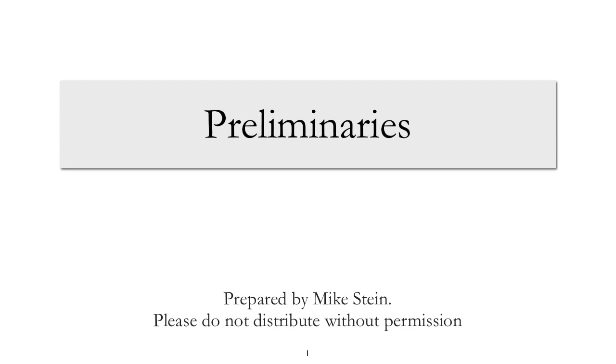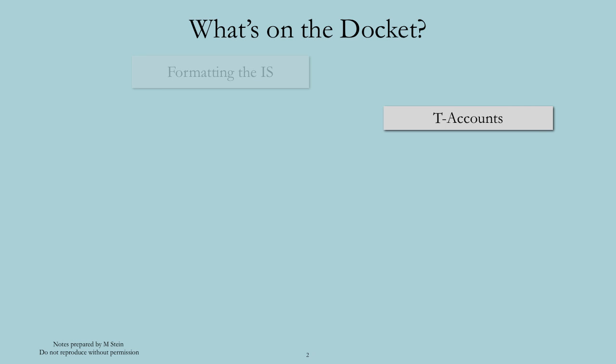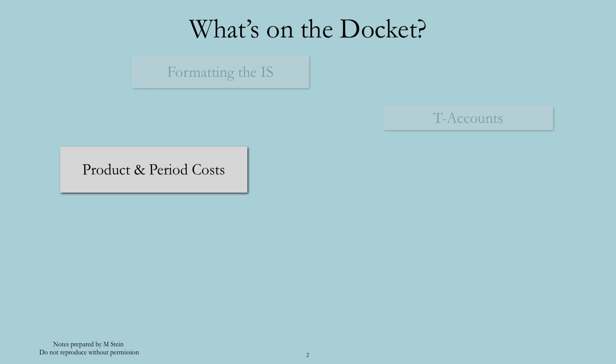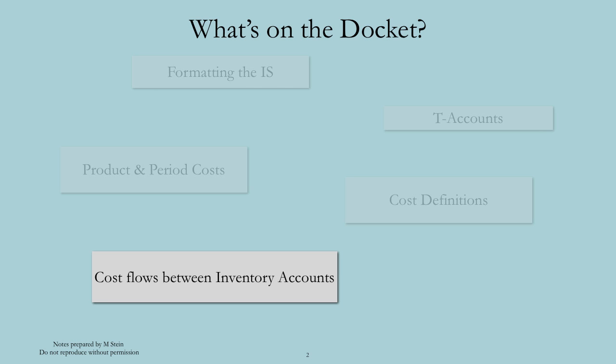This is a series of screencasts meant to supplement the managerial accounting course. For the first week, I've prepared five screencasts. The first will take a quick look at the formatting of the income statement. Next, we will review the use of T-accounts. After that, a quick look at the distinction between product and period costs, examples of cost definitions commonly used in managerial accounting, and the final screencast will be an example of how cost flows move between various inventory accounts.